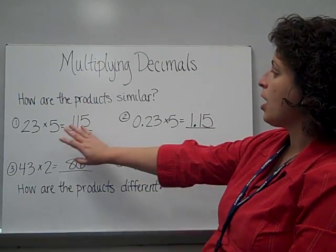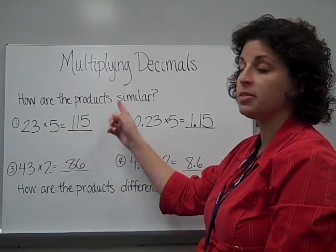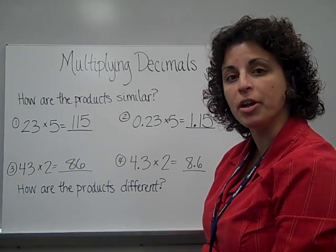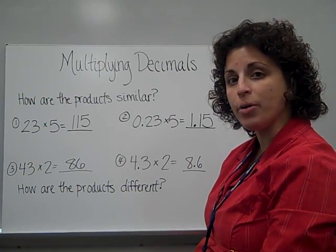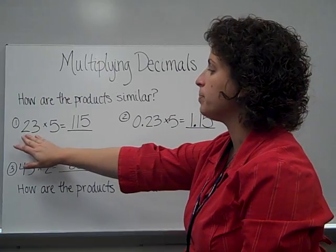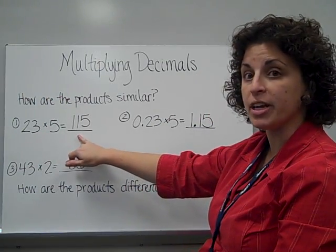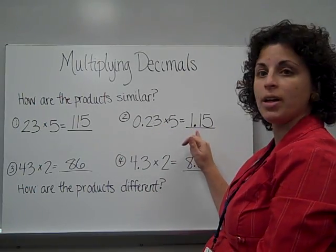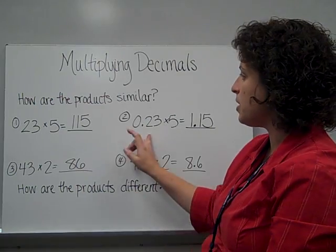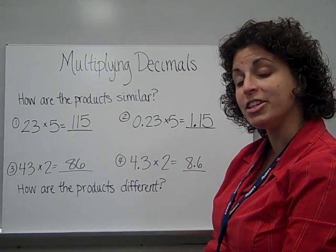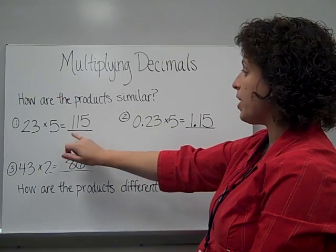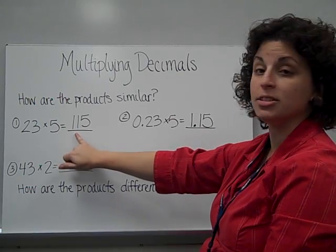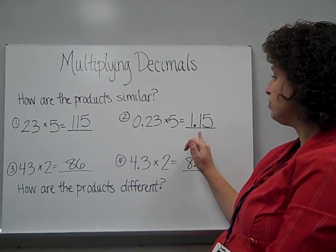Multiplying decimals. I have two problems here that are similar and their products are similar, and their products are different. I want us to take a look and find how they are similar and how they are different. Look at this problem: twenty-three times five is one hundred fifteen. Zero and twenty-three hundredths times five is one and fifteen hundredths. These problems have the same digits and their products have the same digits. This product does not have a decimal, but this one does.